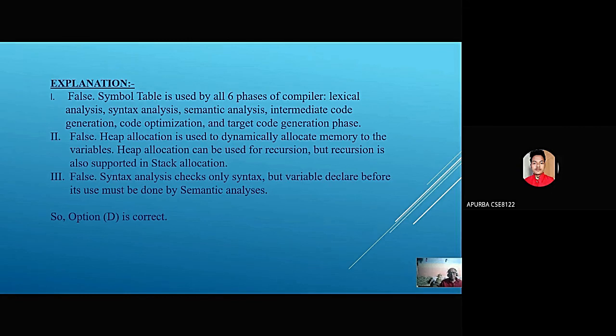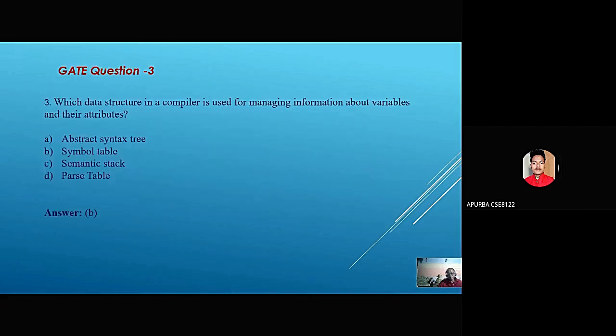The first statement is false because symbol table is accessed in all phases. The second statement is true: heap allocation is used to dynamically allocate memory to variables. The third statement is false: checking that a variable must be declared before its use must be done by semantic analyzer. So option D is appropriate and correct. The next slide will be explained by Devarupi.